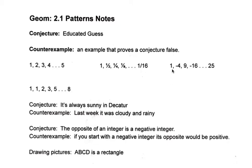The next problem, we have 1, negative 4, 9, negative 16. Hopefully you see the pattern. It goes positive, negative, positive, negative — so it makes sense that our next one would be positive. As far as the numbers go, hopefully you recognize these are perfect squares: 1 squared is 1, 2 squared is 4, 3 squared is 9, 4 squared is 16. Therefore, 5 squared is 25, and it's positive because it's positive's turn.